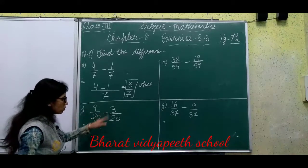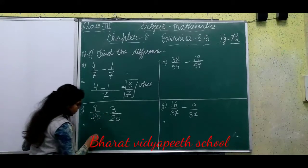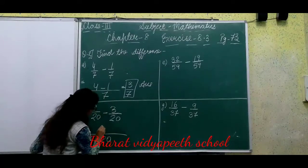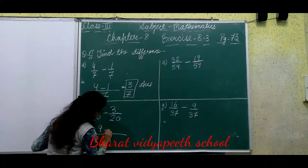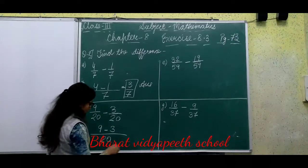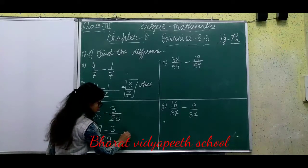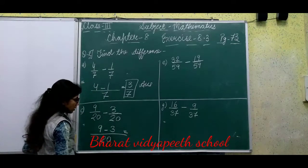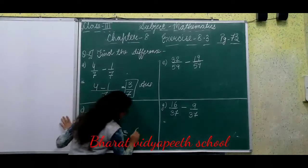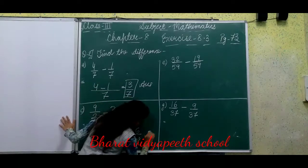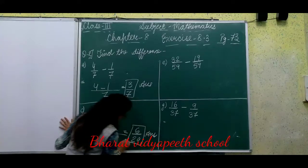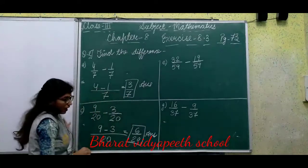Part C: 9 by 20 minus 3 by 20. Denominator 20 stays as it is. We subtract the numerators: 9 minus 3 equals 6. So 6 upon 20 is our answer. Clear, 3rd class.